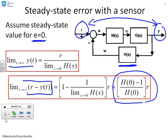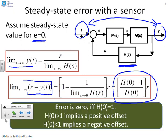What do we think about this value? The error is zero if and only if H of 0 equals 1. That numerator term will only be zero if H of 0 is 1. The other two observations are more minor: if H of 0 is greater than 1, you'll have a positive offset; and if H of 0 is less than 1, you'll have a negative offset.